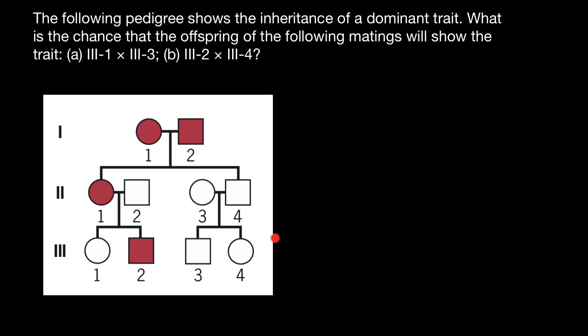According to this pedigree, we see a mother and father who have two children — a daughter and a son — who in their own turn are married and each have two children. So these children in the third generation are going to be cousins.